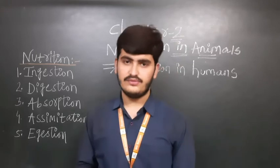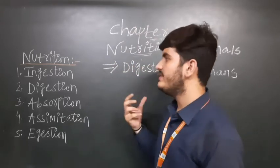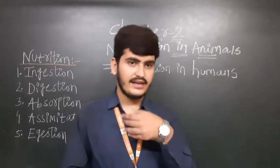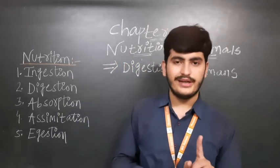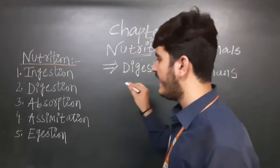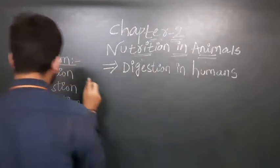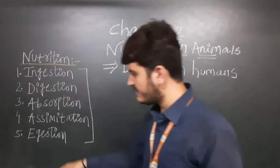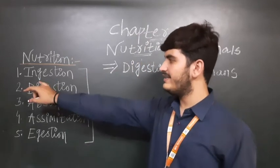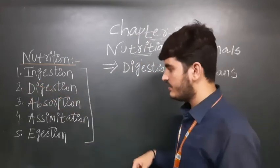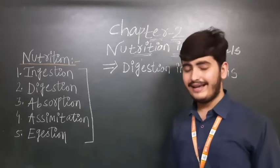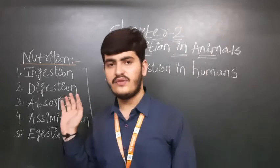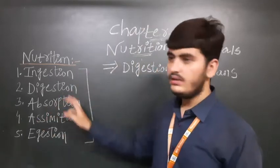We get nutrition from food, but getting nutrition into our body is a very complex process. You can see on the board — it is a complex process — and five processes are involved in it: ingestion, digestion, absorption, assimilation, and egestion. These five processes are included in nutrition.